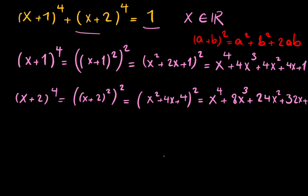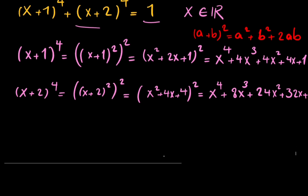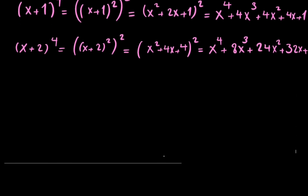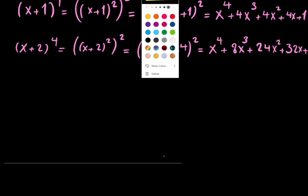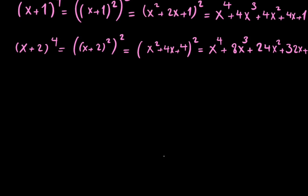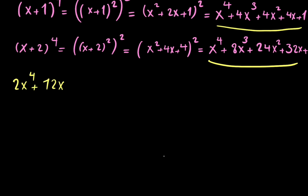Now we add these two results together, and that equals 1. Adding them gives 2x⁴ plus 12x³ plus 30x² plus 36x plus 17 equals 1.